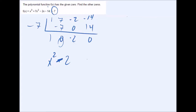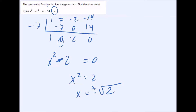The remaining equation from synthetic division is x squared minus 2 (there's no middle term since the coefficient is zero). Setting that equal to zero: x squared equals 2, so x equals plus or minus the square root of 2. The other two zeros are plus or minus square root of 2. When they give you a zero, it saves a lot of time.